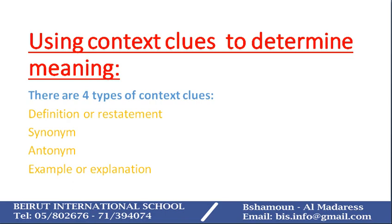The first type is definition or restatement. Authors or editors or writers usually define new words that they use in order to give readers an idea about it. The second type of context clues is using synonyms. Synonyms are words with similar meanings, but sometimes the author chooses an easier word to describe or explain a word that is hard, difficult, or new for readers.